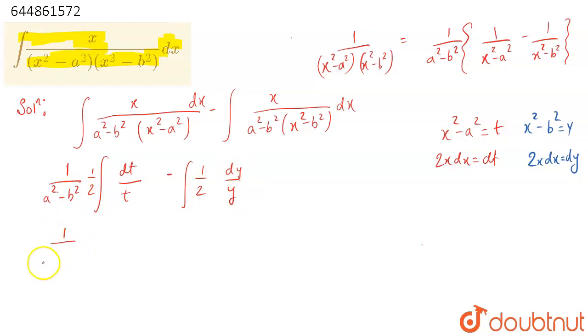Taking 1/2 common gives 1/[2(a²-b²)]. Now the integral of 1/t is log|t|.